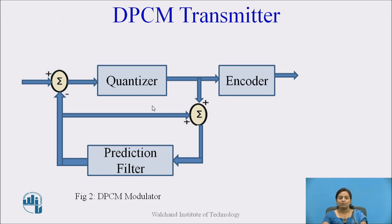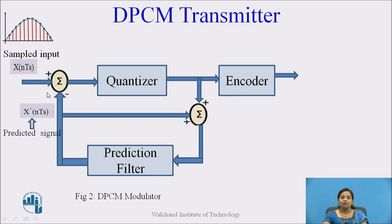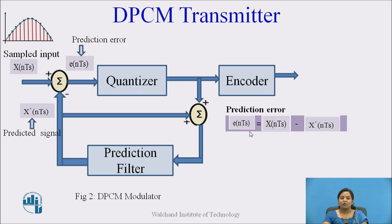Let us see the DPCM transmitter. The input signal is X(NTs), which is the sampled version of the continuous time signal X(t). Another input to the comparator is X'(NTs), which is the predicted signal produced from the prediction filter. The comparator compares the sampled input and the predicted signal, giving the result as the error signal E(NTs). This error is known as the prediction error, defined as E(NTs) = X(NTs) − X'(NTs).